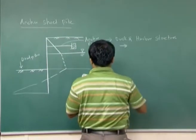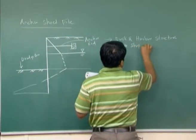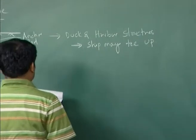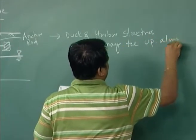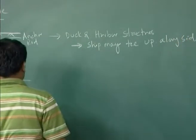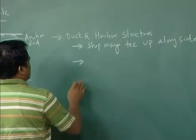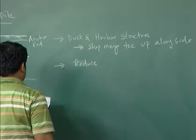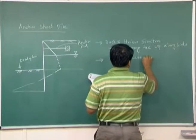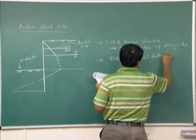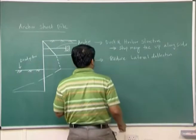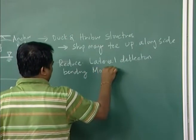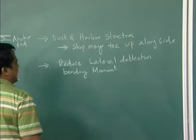The anchor sheet pile will assist — the sheet may tie up alongside. It will reduce lateral deflection, bending moment, and depth of penetration of the pile.